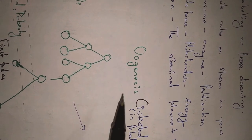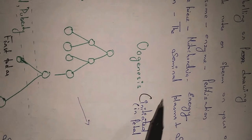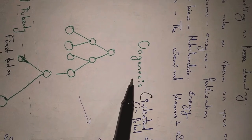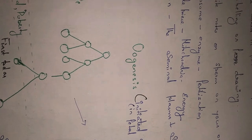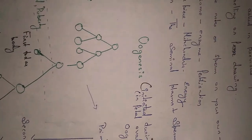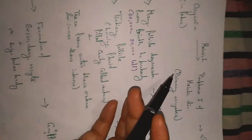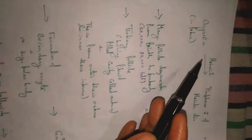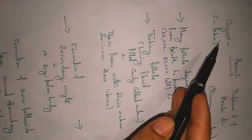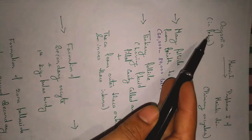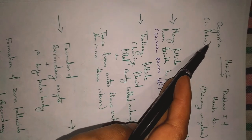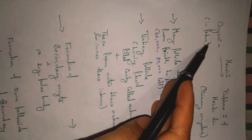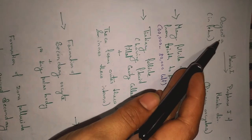Good morning dear students. Today we are going to study the process of oogenesis — it is the process of formation of ovum inside the female ovary. We are studying this in terms of the human ovary. One thing to keep in mind: this process begins in the fetal life of females, when the fetus is within the womb of the mother.